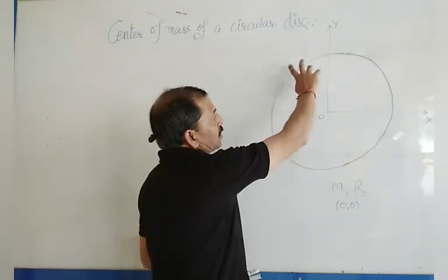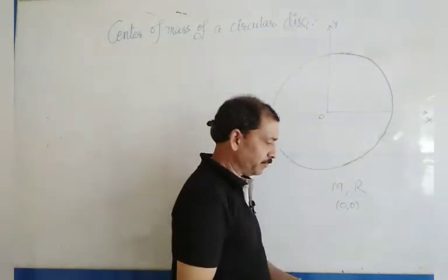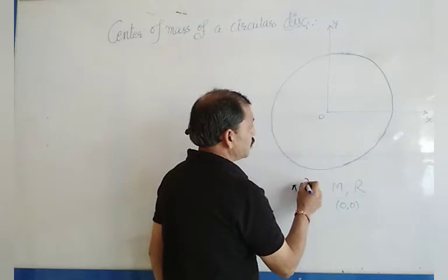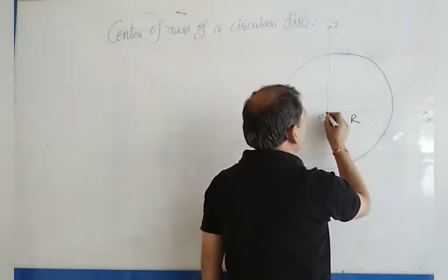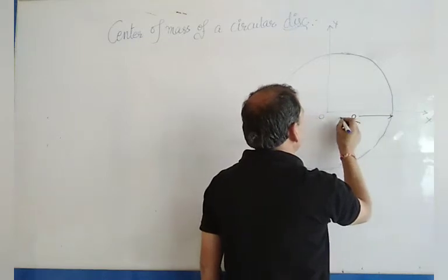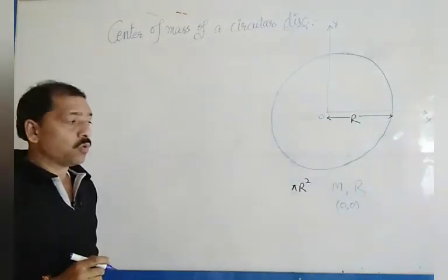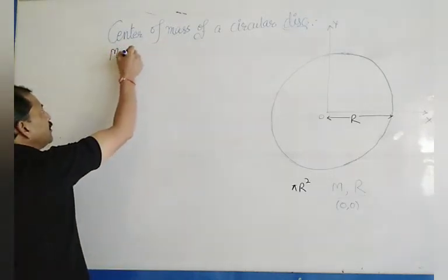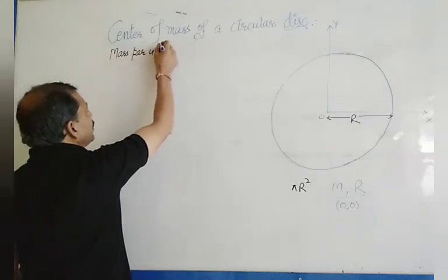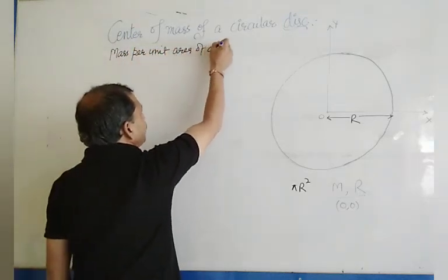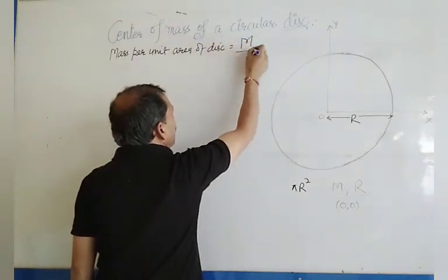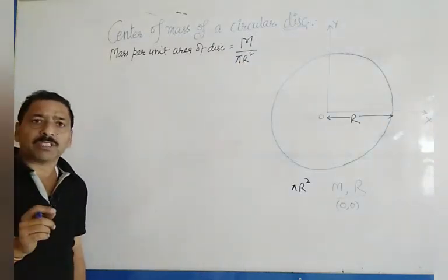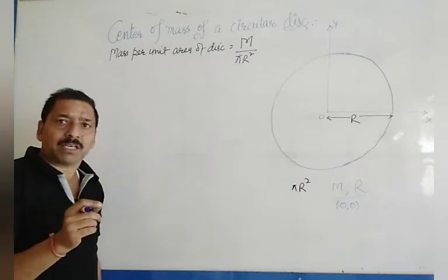We know that the area of this circle is π R². The total area is π R². So the mass per unit area of the disk is equal to M divided by π R².